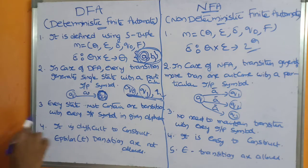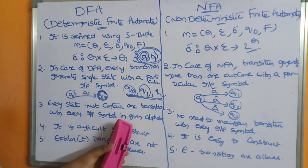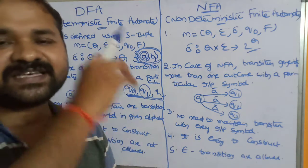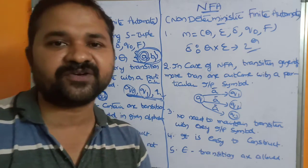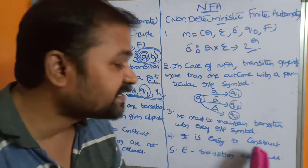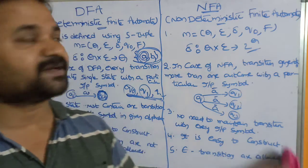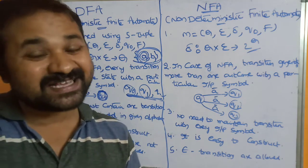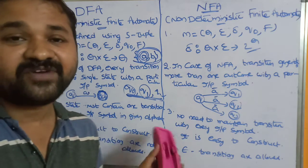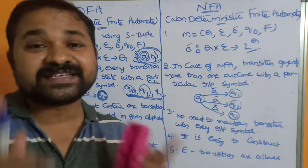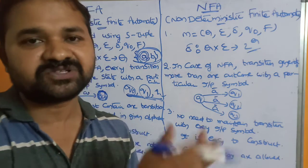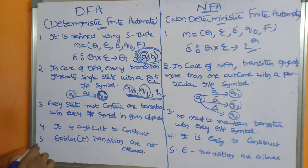The fourth difference: DFA is more difficult to construct than NFA — we will see that in future videos while solving problems. NFA is very easy to construct compared to DFA, because there is no need to use all the symbols present in the alphabet. In DFA, each state must consume all symbols in the alphabet even if it is not necessary, which is the challenge.